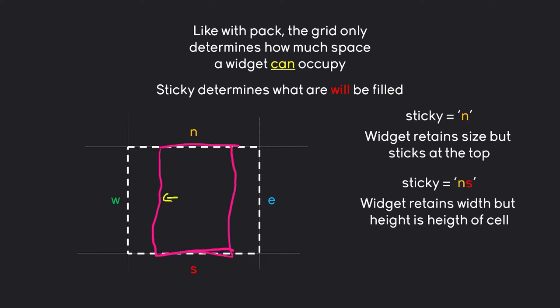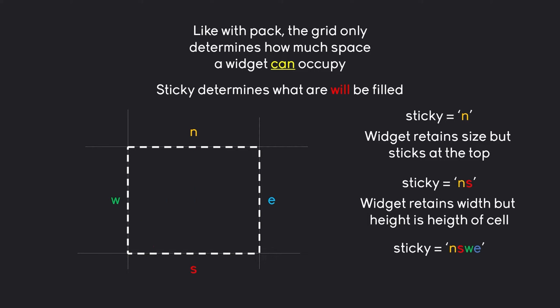However, the width of the widget is going to be determined by the content. For example, if we have a label with some text, then the width of the text is going to determine the width of the widget. Although, if we specify all four directions — north, south, east, and west — we are telling the widget to stick to all four sides of this cell. That way, we have one widget that is as large as the cell it's in.